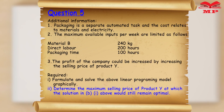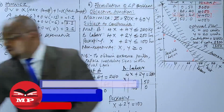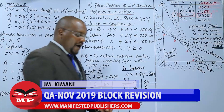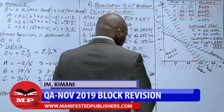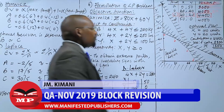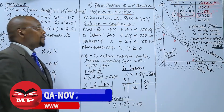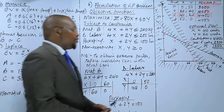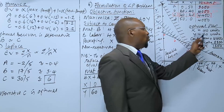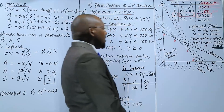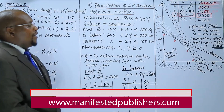Now you ask Roman to determine the maximum selling price of product Y at which the solution in B1 above would still remain optimal. The question is: how do we change the price of Y without changing the solution? The solution here means production of X and Y at 40 and 20.